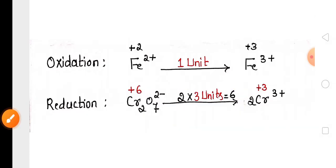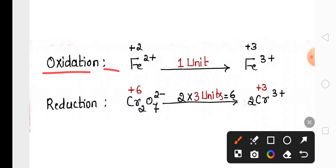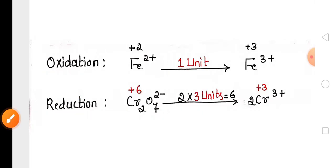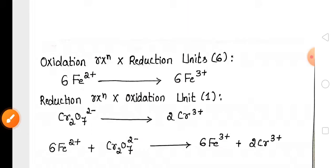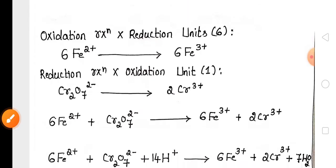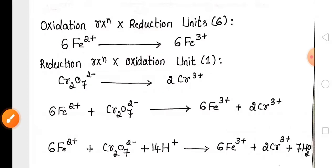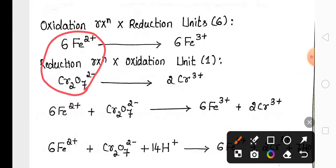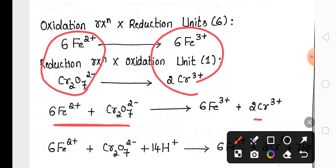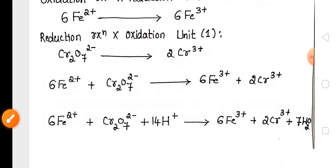In the next step, the oxidation reaction must be multiplied by the reduction unit and the reduction reaction must be multiplied by the oxidation unit. After multiplication, we get the resulting reactions. We then add both half reactions, writing reactants on the reactant side and products on the product side.